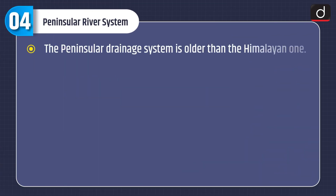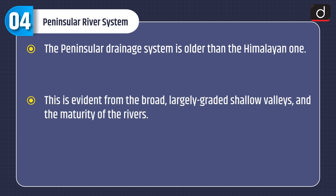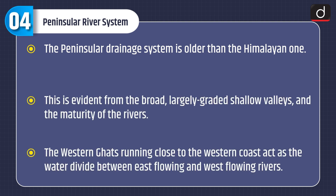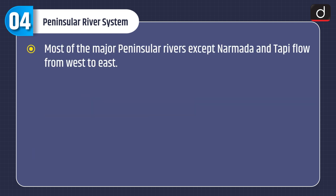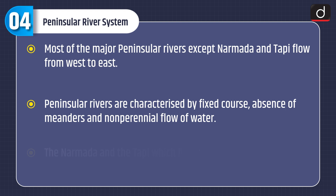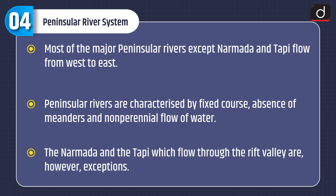The peninsular drainage system is older than the Himalayan one, as is evident from the broad, largely graded shallow valleys and the maturity of the rivers. The Western Ghats, running close to the western coast, act as the water divide between east-flowing and west-flowing rivers. Most major peninsular rivers, except Narmada and Tapi, flow from west to east and are characterized by fixed courses, absence of meanders, and non-perennial flow. The Narmada and Tapi, which flow through rift valleys, are exceptions.